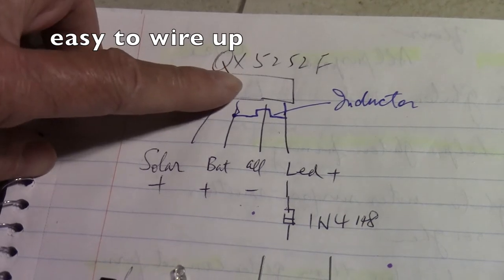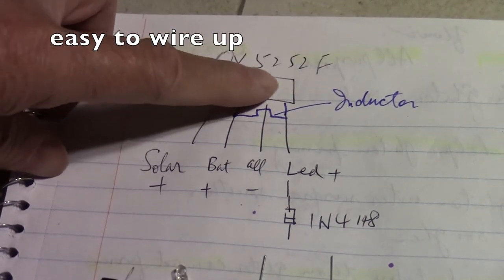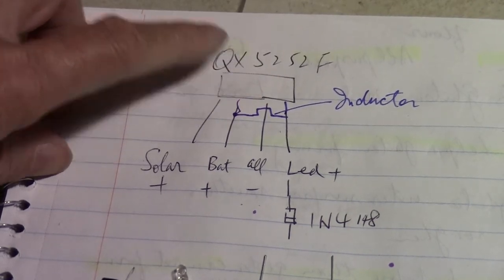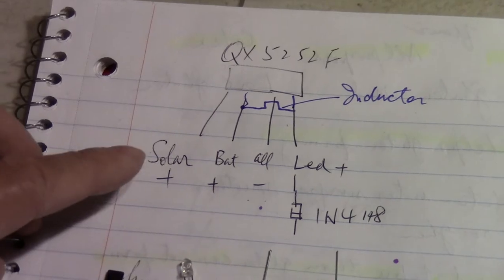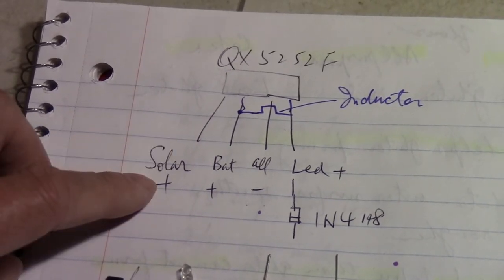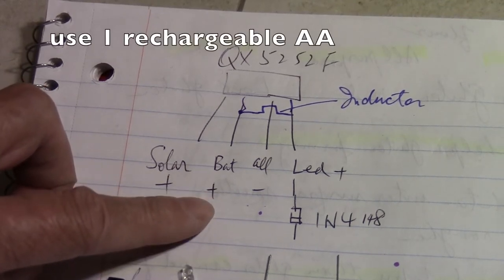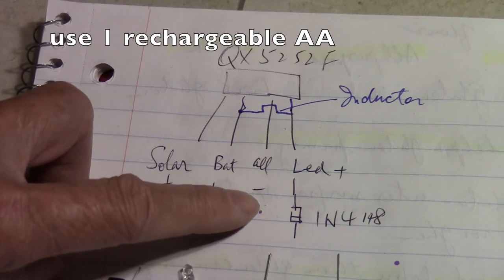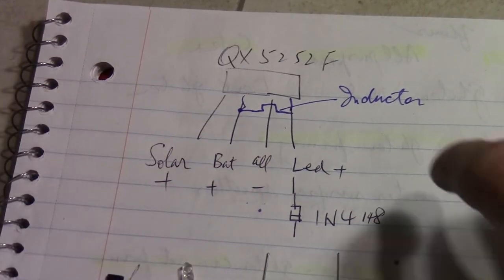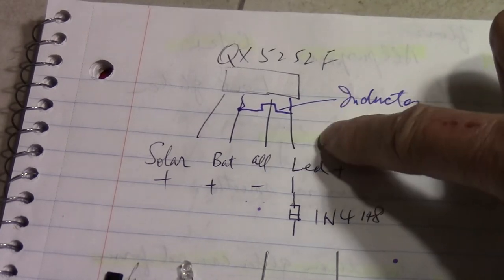So with the chip facing you, the numbers are on here. When you see the numbers, you know you have the right side. So there are four pins. One is solar plus, that's from solar panel. And this is from the battery, battery plus. And then you have the negative here. All the negative connects to this. And then the fourth pin here is the LED positive out.